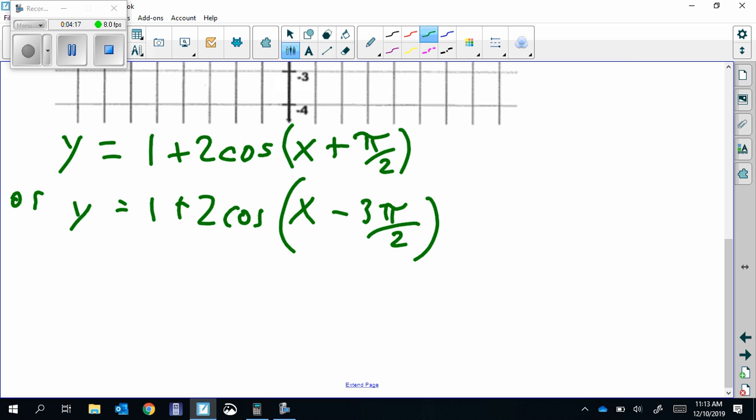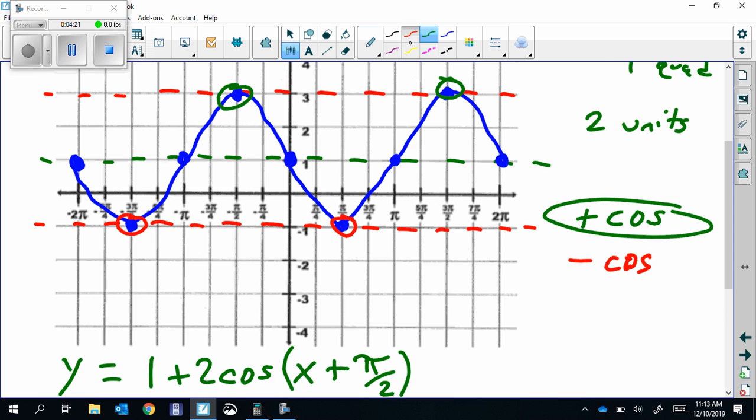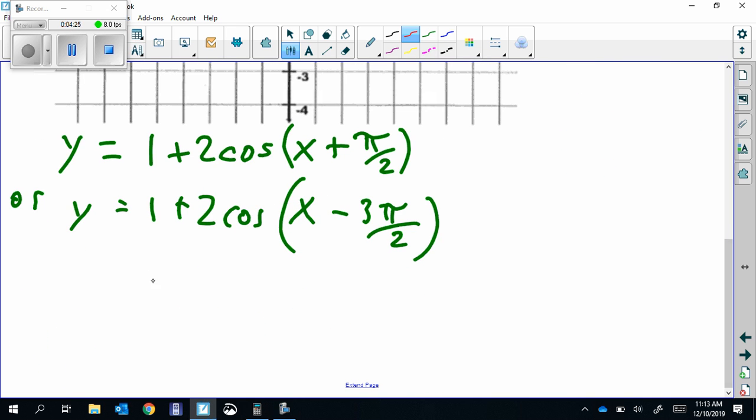You could have done it with negative cosines. You would just choose these two red points instead. Everything else would stay the same, so it would be 1 minus 2 cosine. X would still be X. The only thing that would change would be the point that we put in there.